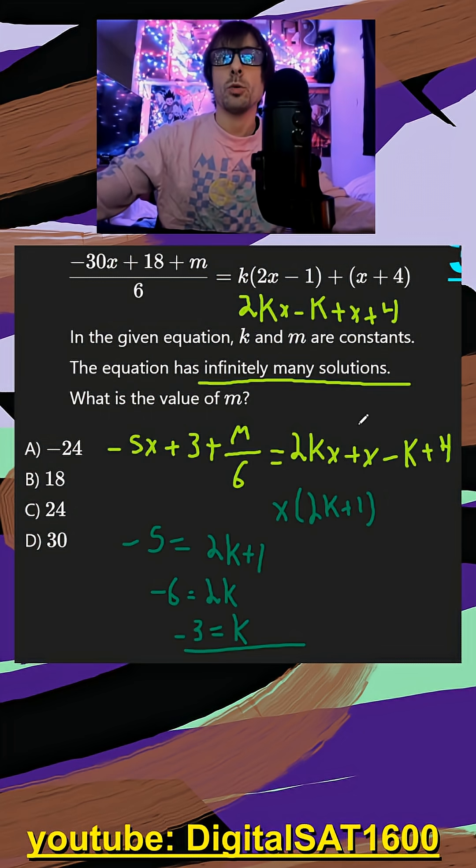And then now we just have to do our y-intercept. Our y-intercept is going to be the constant from this side. So 3 plus m over 6, because m is a constant. And that should be equal to negative k.